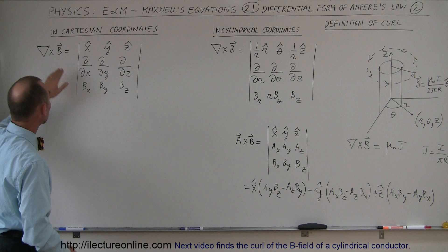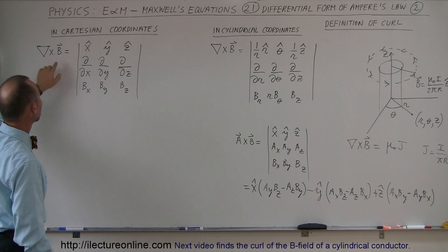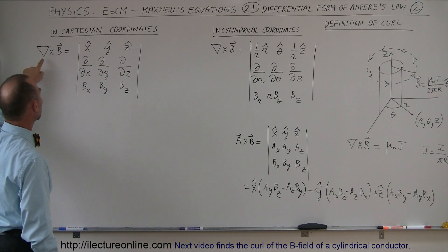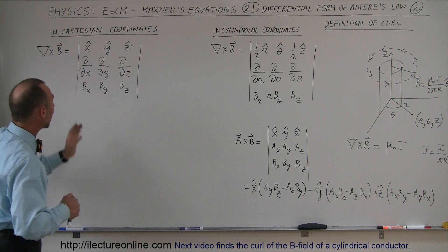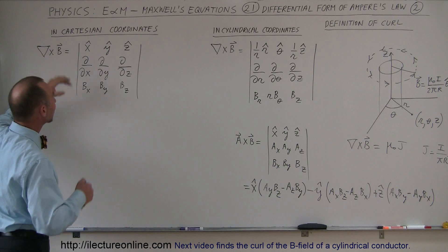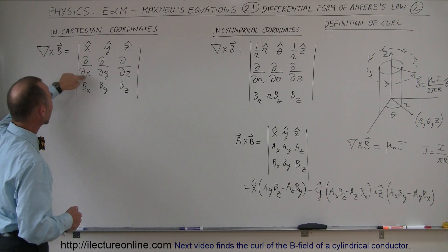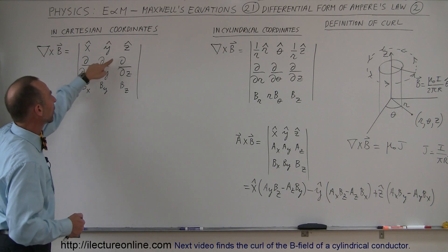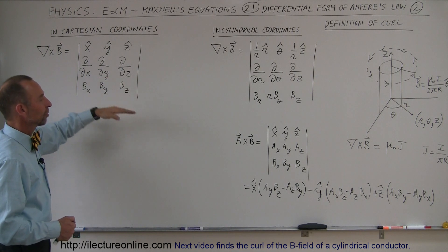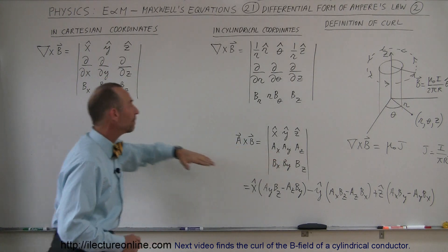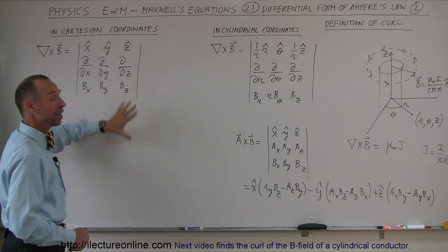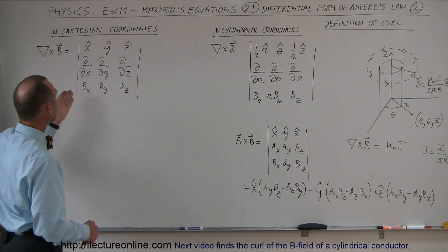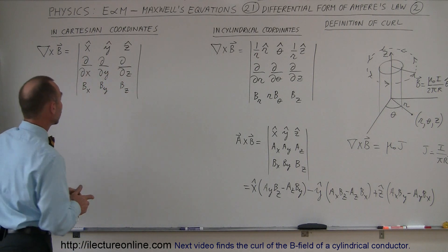It turns out that taking the curl is no different from this, but instead of having vector A, we have what we call the del operator. The del operator is kind of like a vector quantity, but it has the x, y, and z components of the partial derivative with respect to x, the partial derivative with respect to y, and the partial derivative with respect to z. So instead of the x, y, z components of A, we have those partial derivatives instead.